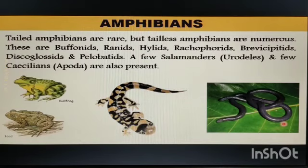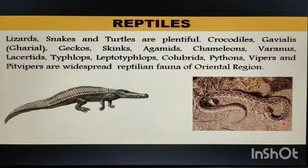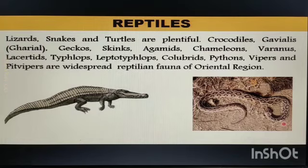Among amphibians, tailed amphibians are rare but tailless amphibians are numerous, including Bufonidae, Ranidae, Hylidae, Rhacophoridae, Brevicipitidae, Discoglossidae, and Pelobatidae. A few salamanders and caecilians are also present. Among reptiles, lizards, snakes, and turtles are plentiful. Crocodiles, Gavialis (gharial), geckos, skinks, agamids, chameleons, varanids, lacertids, Typhlops, Leptotyphlops, colubrids, pythons, vipers, and pit vipers are widespread reptilian fauna of this region.